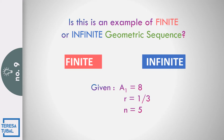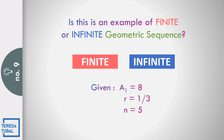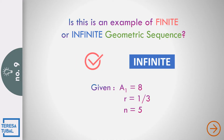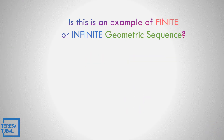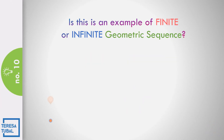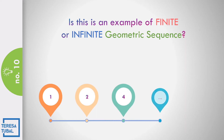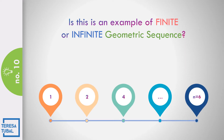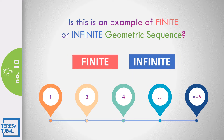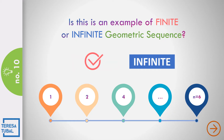How about number 9? Finite or infinite? The answer is finite. How about number 10? In the geometric sequence 1, 2, 4, and three dots, with n equal to 6 — finite or infinite? The answer is finite, because you have the first term and you have the last term since n is equal to 6.